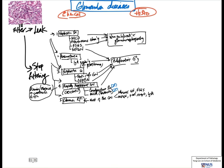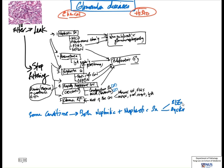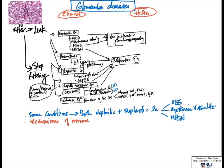Some important points: some conditions may give rise to both nephrotic and nephritic syndromes — they are not exclusive. Examples include systemic conditions like SLE, systemic vasculitis, and membranoproliferative glomerulonephritis. Regarding mechanisms of immune-mediated injury: glomerular diseases are usually immune-mediated, due to antibodies attacking antigens either in the blood or in the glomerulus itself. There are three types of antibody-antigen reactions, one of which is where the antibody binds to an in-situ antigen in the glomerulus.